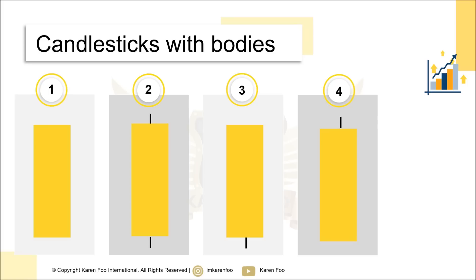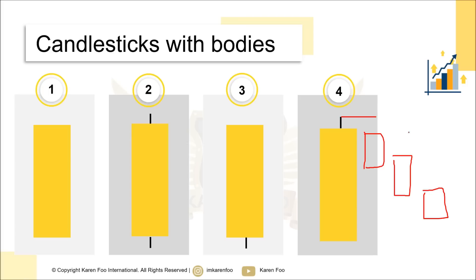A candle with a small upper shadow and no lower shadow is more of a bearish sign. With any candlestick signal, you need confirmation from the next few candles. For a bearish signal, you want subsequent candles to remain below the highest point of the shadow. For the bullish candle, you want candles to remain above the low point of the shadow — and better yet, if price breaks above the high, it confirms a bullish sign.